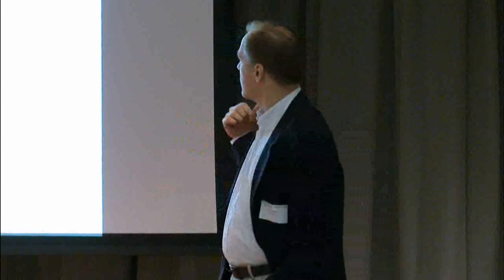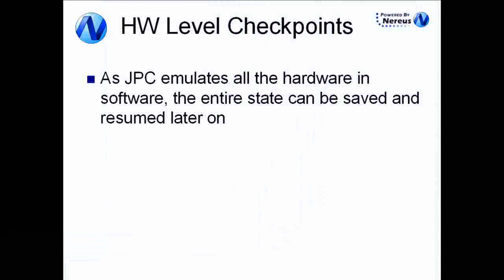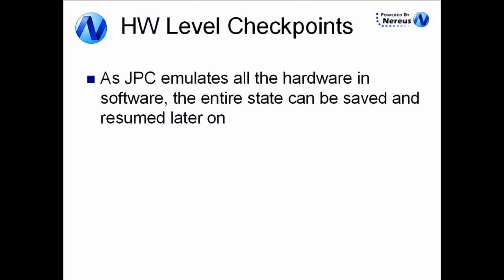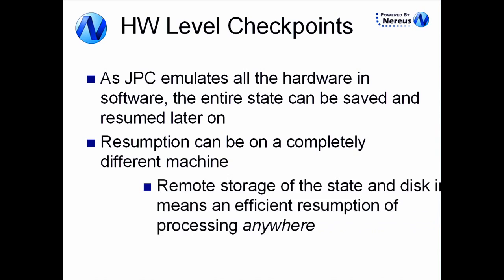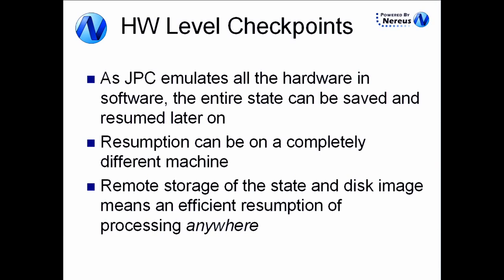Another feature of JPC is hardware-level checkpoints. Because we emulate everything in hardware, we can literally stop the CPU at a clock cycle, freeze it, and save the entire state — including memory, disk state, all registers, everything — so we can resume it later. We can also resume on a completely different machine, just by moving the state around. If we store the state somewhere else, a third location, that state becomes available anywhere in the world and the machine executing the virtual machine can be anywhere.